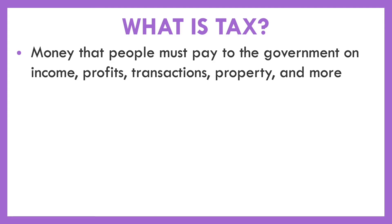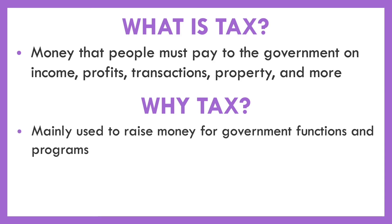Why exactly does the government tax? As discussed before, public goods wouldn't be provided otherwise. The government has to raise money to provide things like police, fire departments, roads, and parks. Beyond that, the government needs money just to function, so they tax the people they govern — meaning the people are technically paying for the government to operate.